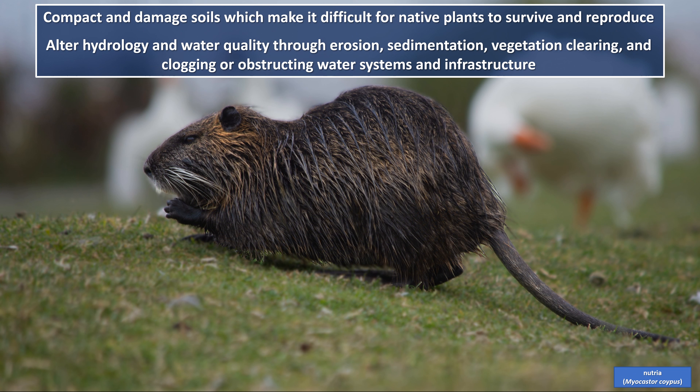Invasive and feral wildlife can compact and damage soils, which makes it difficult for native plants to survive and reproduce, and they can alter hydrology and water quality through erosion, sedimentation, vegetation clearing, and clogging or obstructing water systems and infrastructure. For example, nutria, which is a large, invasive, semi-aquatic rodent brought to California for its fur from South America, can cause serious damage to aquatic systems through their burrowing and non-stop feeding on vegetation above and below the ground surface. The damage caused by their digging and clearing of vegetation can cause soil erosion and create areas of open soils and open water.